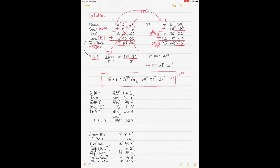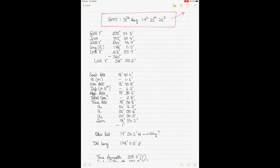If you didn't follow that, watch my video on solving the chronometer time ambiguity. Now, with the correct GMT date and time, go into the 1992 Nautical Almanac and find GHA Aries for 17 hours, then find the increment for 22 minutes and 26 seconds. The increment is always added. Once added, you get GHA Aries for 17 hours 22 minutes 26 seconds.